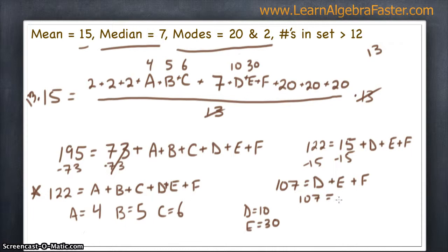So, 107 equals D, which is 10, E, which is 30, and then we'll solve for F. So, 107 equals 40 plus F. We'll subtract 40 from each side. 107 minus 40 equals 67, and that equals F.